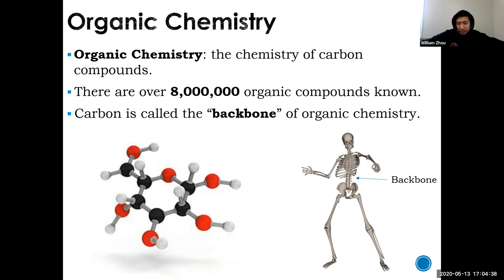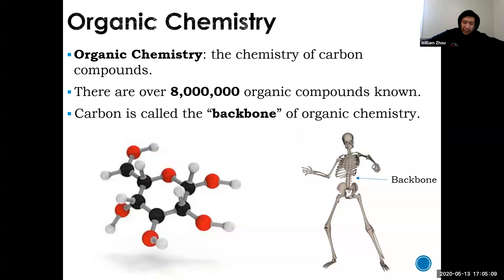There are many different kinds of organic compounds — over 8 million — and it's not feasible to learn all of them. We're going to pick a small set that follow a certain pattern, which is why we're able to learn them. Carbon is our protagonist for this unit; it is literally the backbone of organic chemistry.